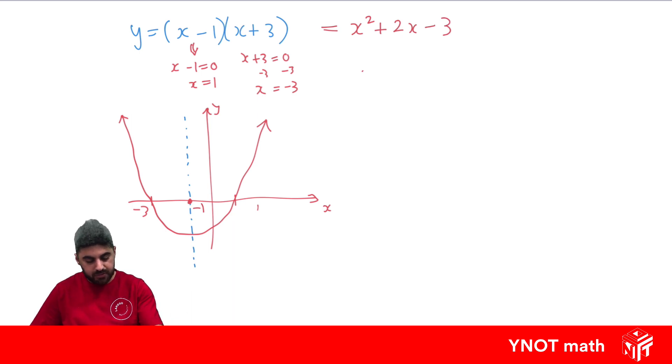We can also find the axis of symmetry using the equation x equals minus b over 2a, where a is the coefficient of the x squared term and b is the coefficient of the x term. So let's see what happens here. X equals minus b, so it's minus 2 over 2 times a. Well, the coefficient of x squared is just 1, so we get minus 2 over 2, which is minus 1, exactly in the middle where we just found our x-intercepts.